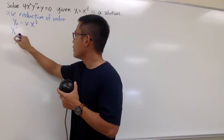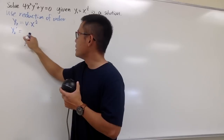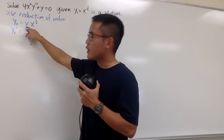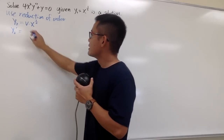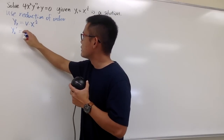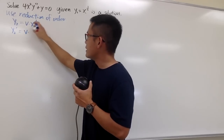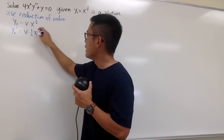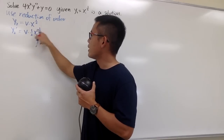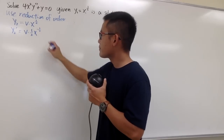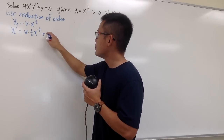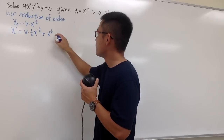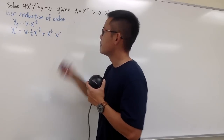Let's do the first derivative for y₂, which requires the product rule since φ is a function of x. I keep the first function φ and multiply by the derivative of the second, which is 1/2 · x to the negative 1/2 power. Then we add the second function x to the 1/2 power times the derivative of the first, which is φ prime.